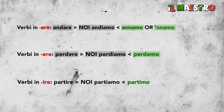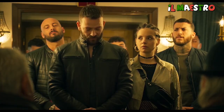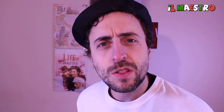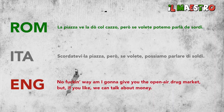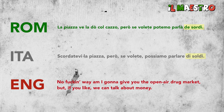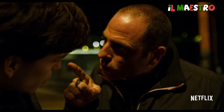Numero quattro: L prima di consonante diventa R — the L before a consonant becomes R. This phenomenon is called rhotacization. Clip: 'La piazza ve la do col cazzo. Però se volete potremo parla dei sordi.' Standard Italian: 'Scordatevi la piazza. Però se volete possiamo parlare dei soldi.' — 'No fucking way I'm gonna give you the open-air drug market. But if you like, we can talk about money.' The rhotacization: 'di soldi' → 'de sordi' — the L is pronounced as an R. Another clip reinforces this: 'c'ha 24 ore di tempo per portarmi i sordi' — 'li soldi,' 'i sordi.' It's a recurring feature.